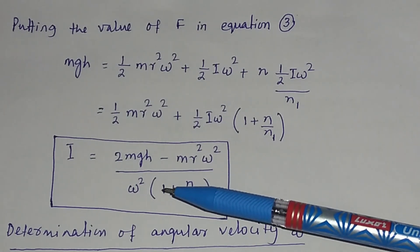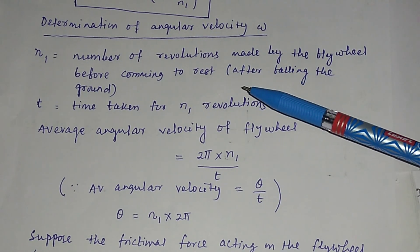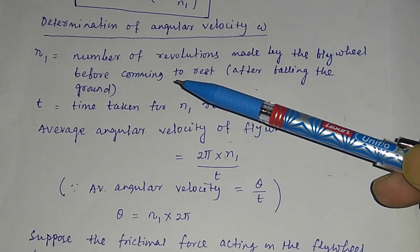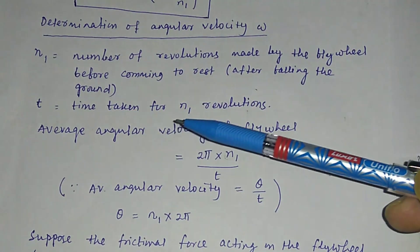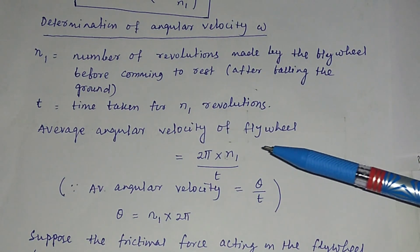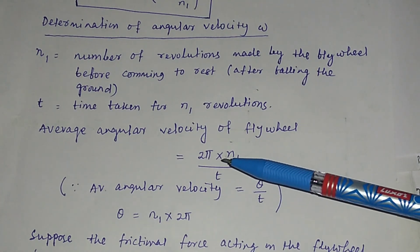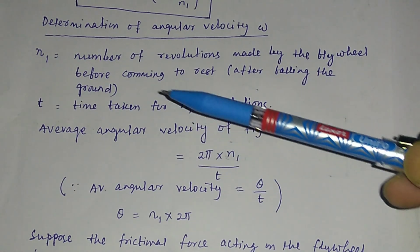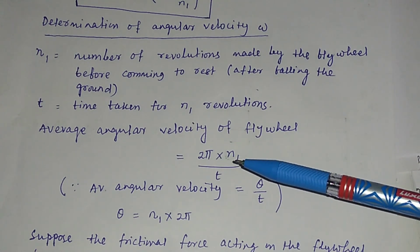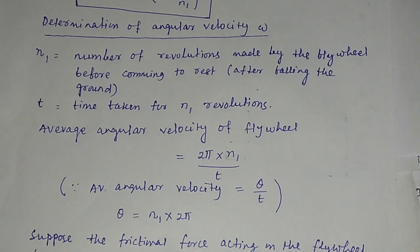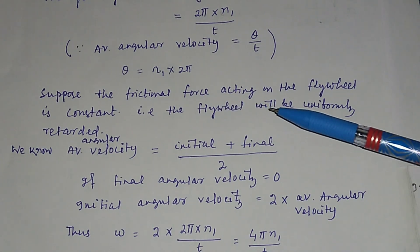To determine the angular velocity: n1 is the number of revolutions made by the flywheel before coming to rest after the mass lands. Suppose the time taken for n1 revolutions is t. The average angular velocity equals θ/t. For one revolution the angle is 2π, so for n1 revolutions the total angle is 2π × n1. Therefore the average angular velocity = 2π × n1 / t. In the experiment, the frictional force acting on the flywheel is assumed to be constant, so the flywheel moves with uniform retardation.